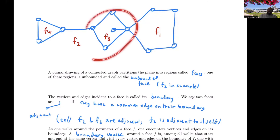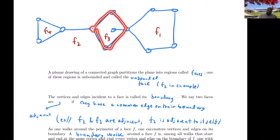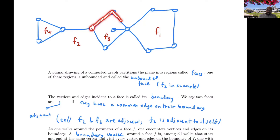Face f3 is where we see some relative complication. You might think you could go around simply, but you'd be excluding a vertex. A boundary walk for f3 actually has six edges: you have to go up, into a vertex and then back out, to be able to complete the walk and return to the starting vertex.